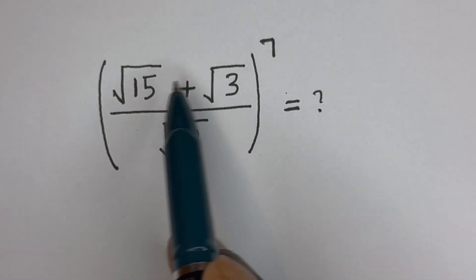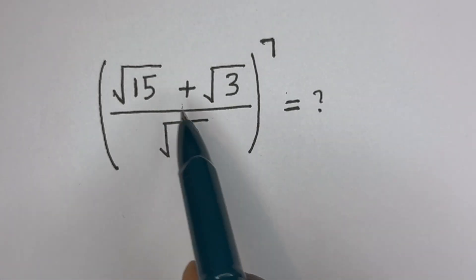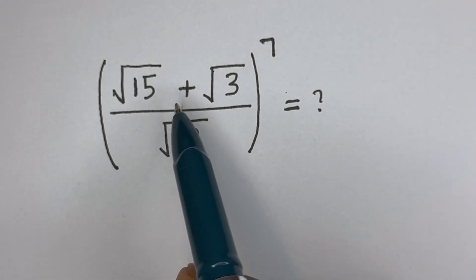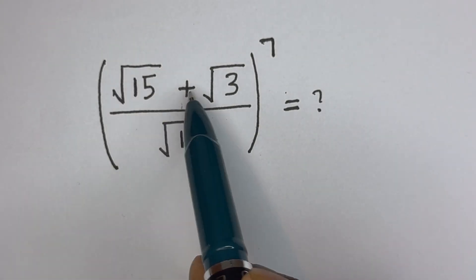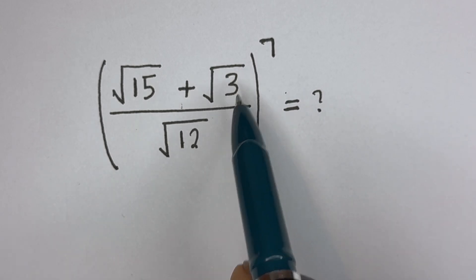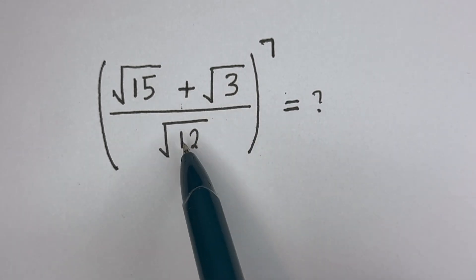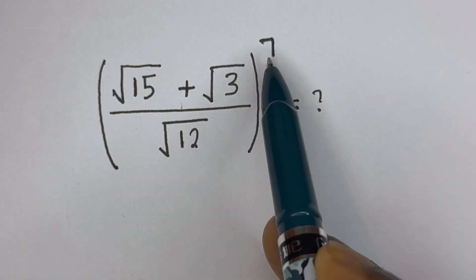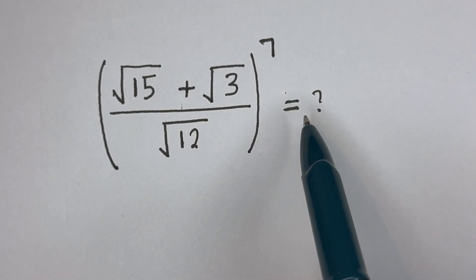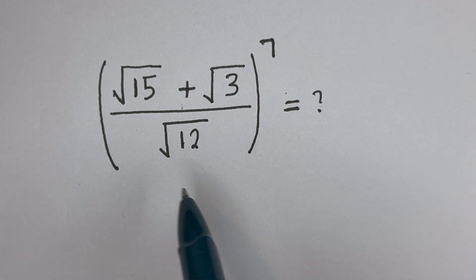Hello, how to simplify this nice math problem without using a calculator? Square root of 15 plus square root of 3, divided by square root of 12, all to the power of 7 is equal to what?